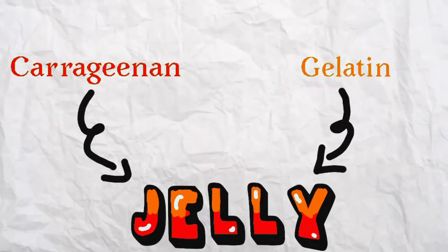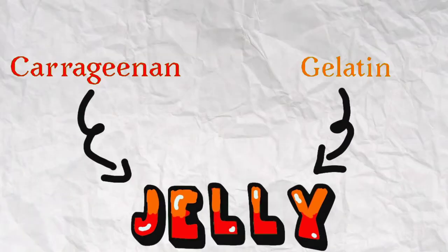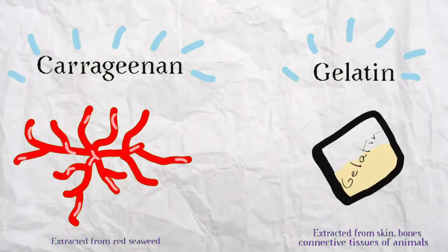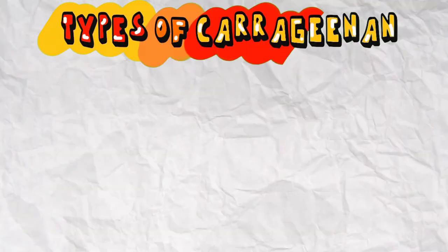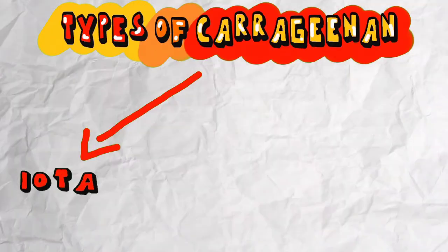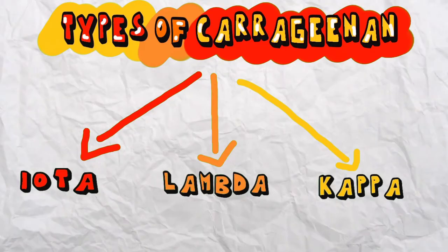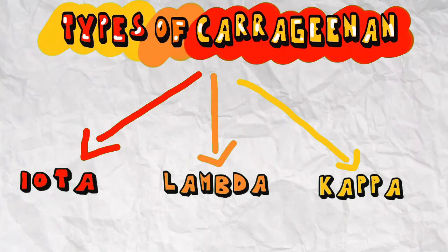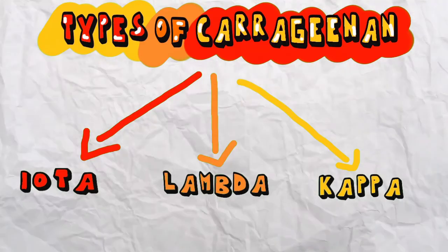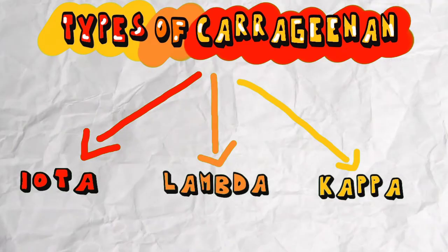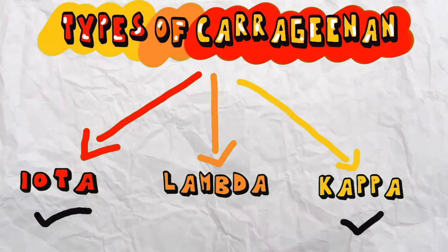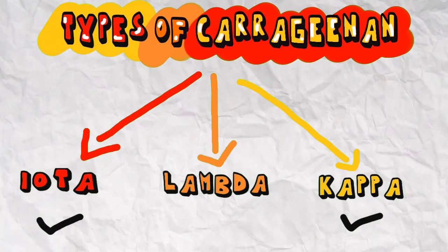Here we have gelatin jelly and carrageenan jelly — three types of carrageenan: iota, lambda, and kappa carrageenan. Each of the types has different properties, but in this video we only look at iota and kappa, since lambda cannot form a gel.